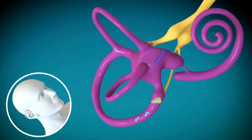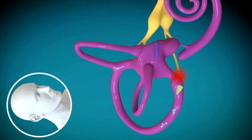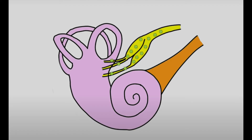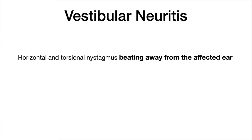In BPPV, you have an ear rock problem which produces nystagmus with certain head movements. In vestibular neuritis, it's thought that a virus causes inflammation of the vestibular nerve on one side, impairing the signals getting to the brain. In vestibular neuritis, the nystagmus actually beats away from the affected ear, or towards the good ear. There are clinical implications related to the head impulse test, which is part of the HINTS exam — how you diagnose vestibular neuritis.